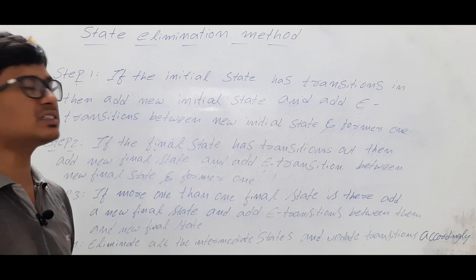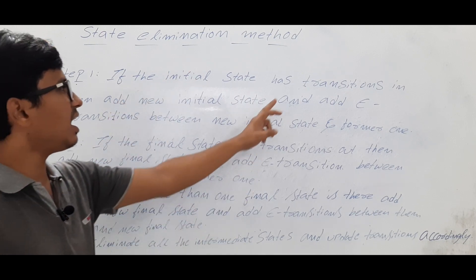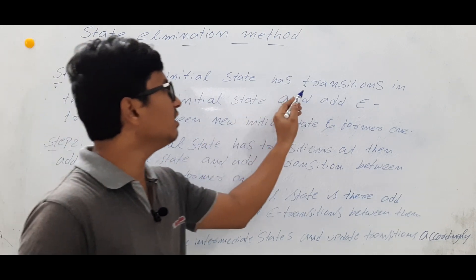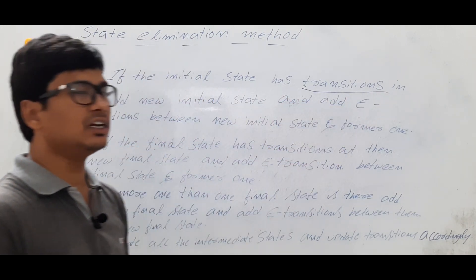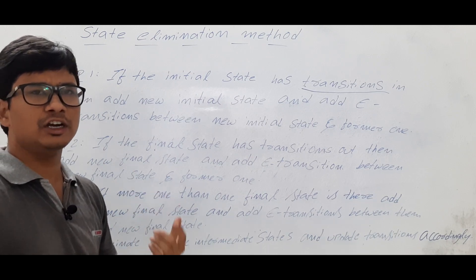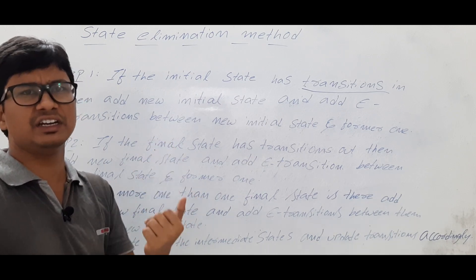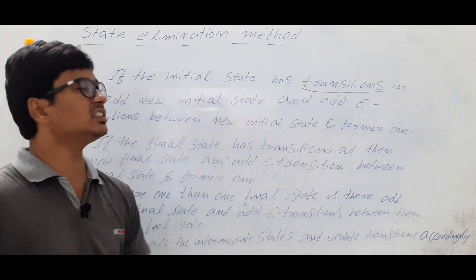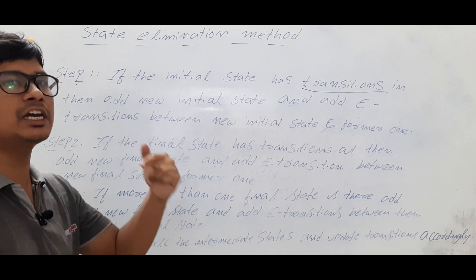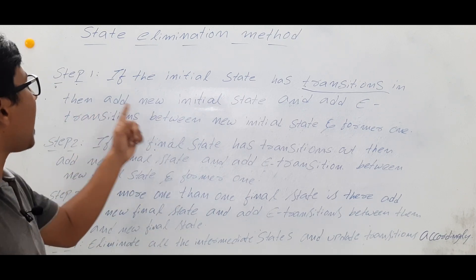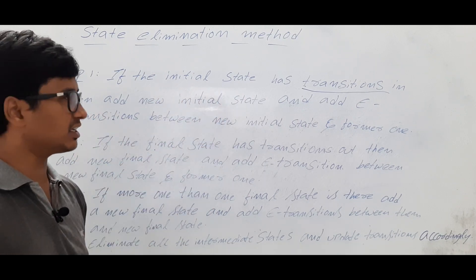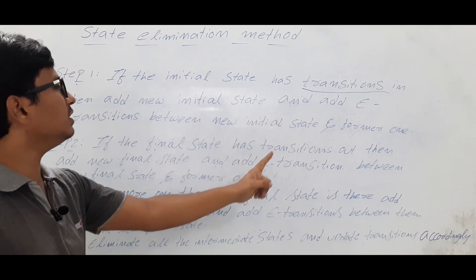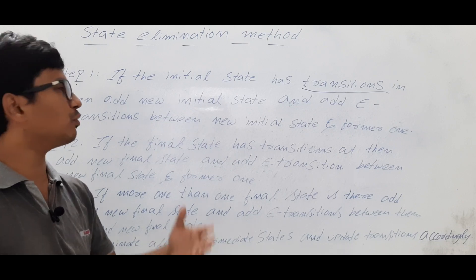Step one says that if the initial state has transitions in — meaning if there is an incoming edge to the initial state — because in a finite automata you will have an initial state and a final state. If the initial state has an incoming edge, then add a new initial state and add an epsilon transition between the new initial state and the former one.